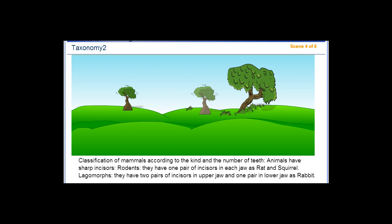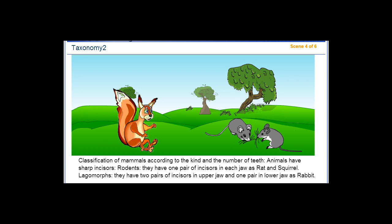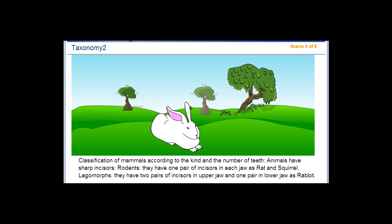Classification of mammals according to the kind and number of teeth. Animals with sharp incisors are rodents. They have one pair of incisors in each jaw, such as rats and squirrels. Lagomorphs have two pairs of incisors in the upper jaw and one pair in the lower jaw, such as rabbits.